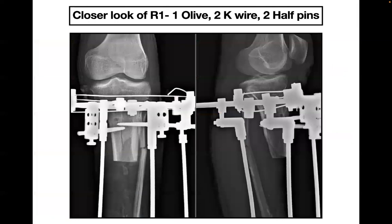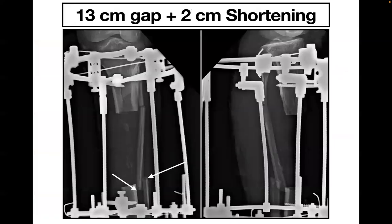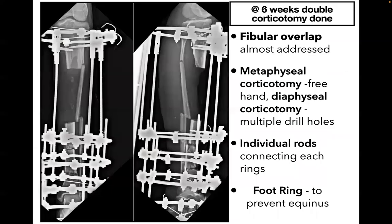The proximal fragment was fixed with 1 olive wire, 2 K-wires, and 2 half-pins placed at anteromedial and anterolateral locations. A 13 cm gap with fibula overlap was noted, which was gradually addressed during distraction. Metaphyseal corticotomy was done with the free-end technique and diaphyseal corticotomy with the multiple drill-hole technique. Corticotomy was performed at 6 weeks, with individual rods connecting each ring, and a foot ring applied to prevent equinus.